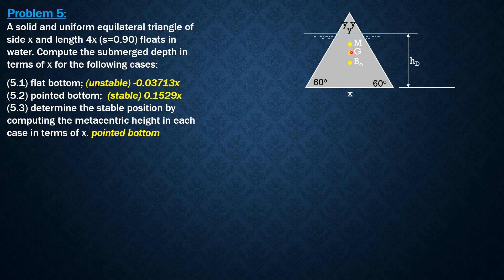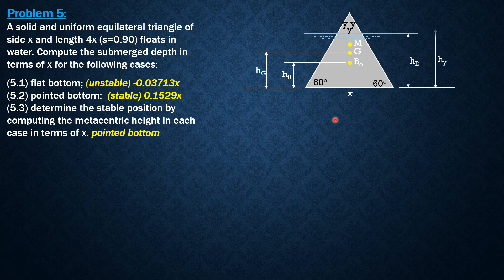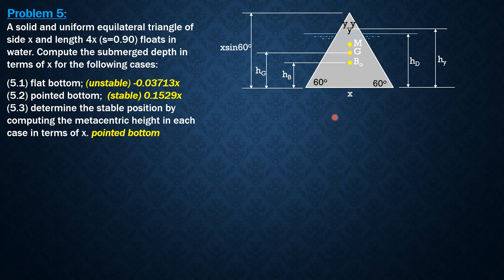We assume the metacenter is above G, so MG is assumed positive. We call the distance of the center of buoyancy from the base as hb, the center of gravity from the bottom as hg, and the height of the portion of the equilateral triangle of dimension y above the waterline section as hy. The distance of the centroid of this portion above the waterline is one-third of the height, and the height is y sine 60°, just like the height of the original equilateral triangle is x sine 60°.